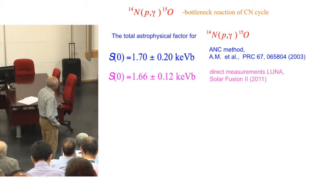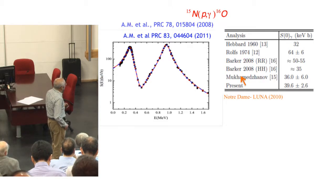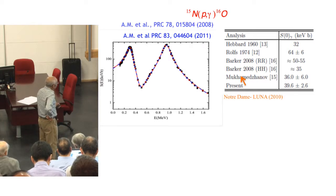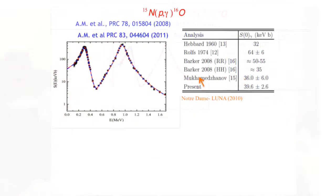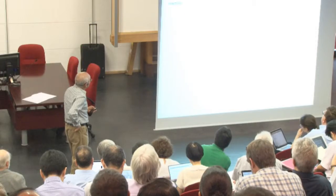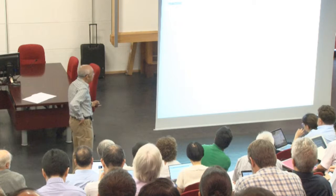The second reaction is the leak from the CN cycle. These are Notre Dame and Luna data. They fit using R-matrix, whereas ANC is correctly fitted. This is the result obtained by Notre Dame Luna, and this is ANC which we obtained two years before.